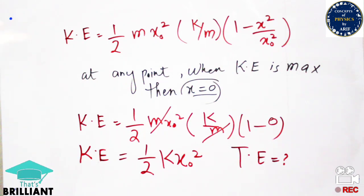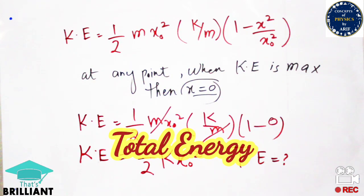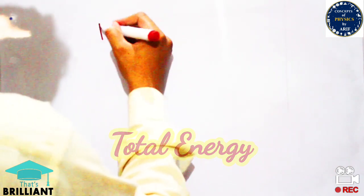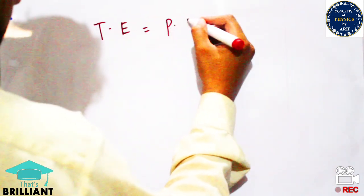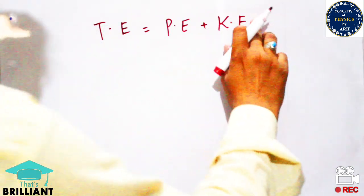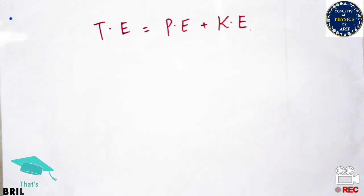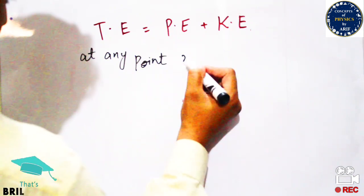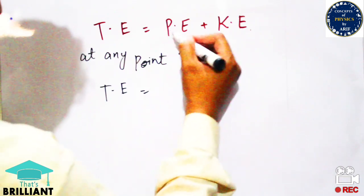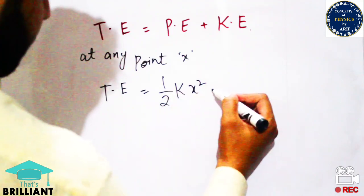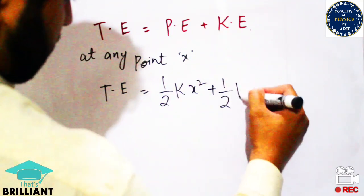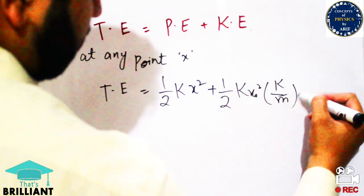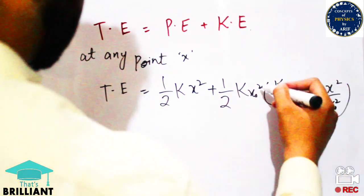We now calculate the total energy at any point and observe how kinetic energy converts into potential energy and vice versa. The total energy equals the sum of potential energy plus kinetic energy. At any point X, potential energy is ½kX² and kinetic energy is ½MX₀²·(k/M)·(1 − X²/X₀²).